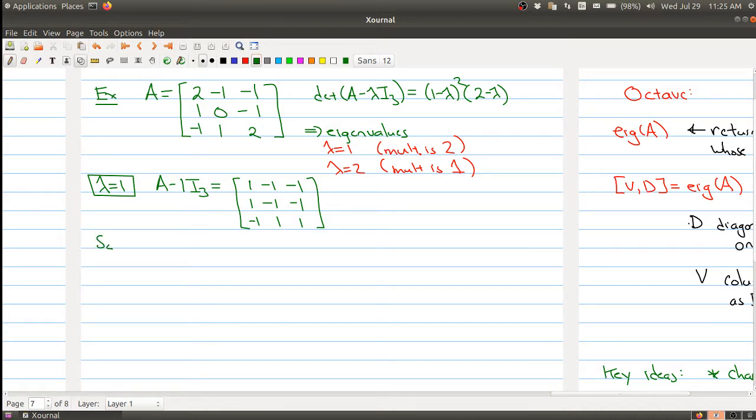We're trying to set up the matrix A minus the eigenvalue times the identity matrix of size 3. You get this matrix here, and you're trying to solve this homogeneous system of linear equations.